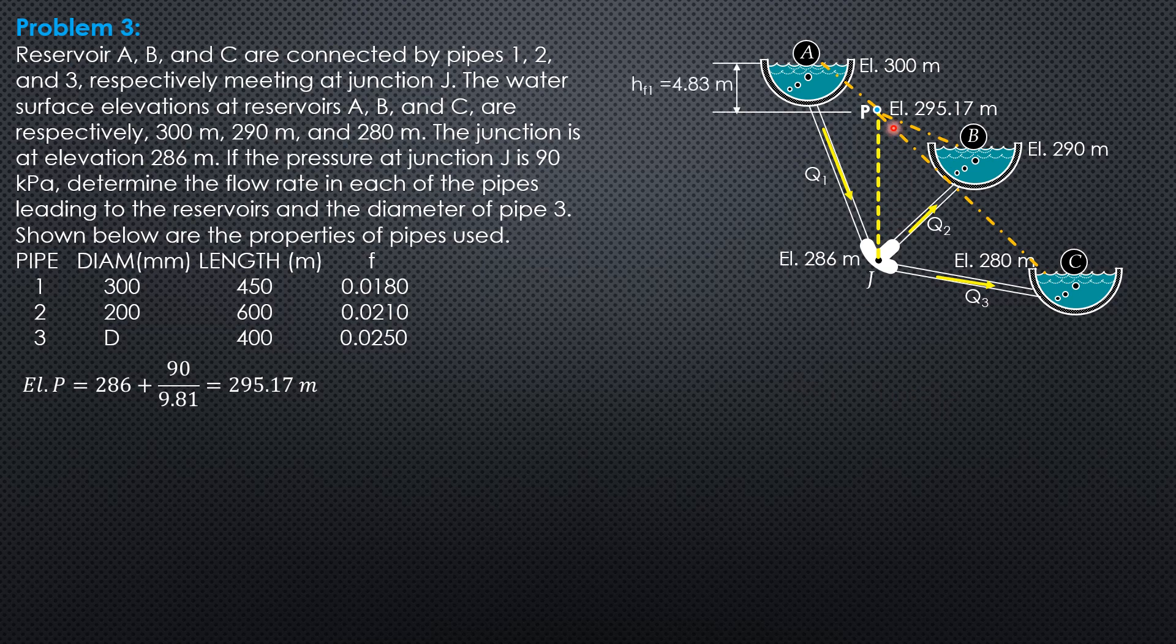Then the difference in elevation between water surface at A and at P is 4.83. 4.83 is 300 minus 295.17. That's the head loss in pipe 1. The head loss in pipe 2 is 295.17 minus 290, that is 5.17. Then finally the head loss in pipe 3 is 295.17 minus 280, which is 15.17.